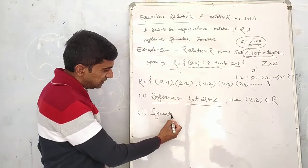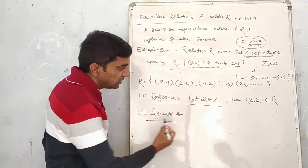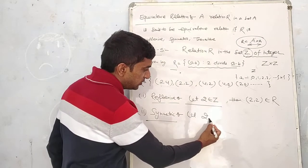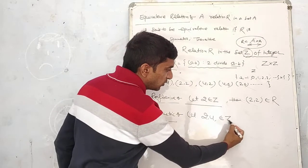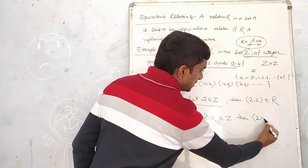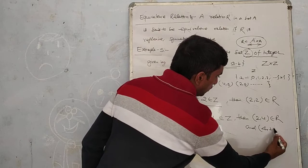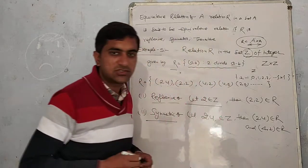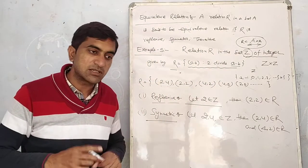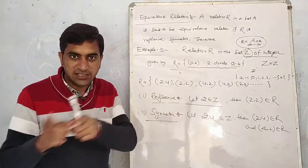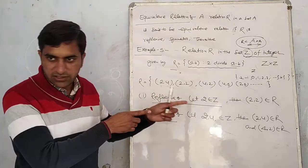Symmetric. I took two elements in symmetric. Let (2,4) belong to the relation. If it is like this, then what should happen? (2,4) belongs and (4,2) must also belong. What is this? Symmetric. You can understand it in any way.